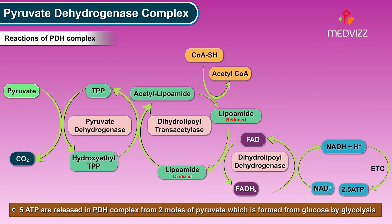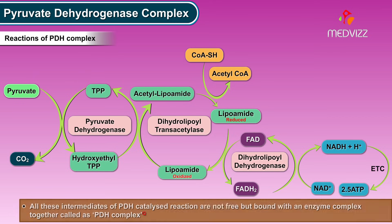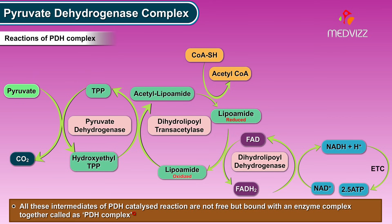As a whole, 5 ATP are released from the PDH complex per 2 moles of pyruvate formed from glucose by glycolysis. All intermediates of the PDH-catalyzed reaction are not free but are bound to the enzyme complex together, called the PDH complex.